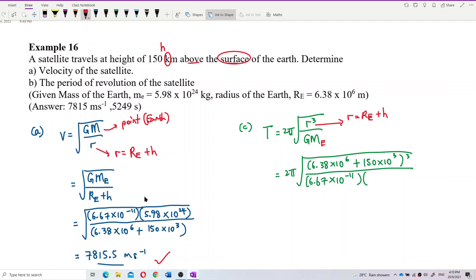So what is the mass of Earth here? Mass of Earth is 5.98 exponent 24.